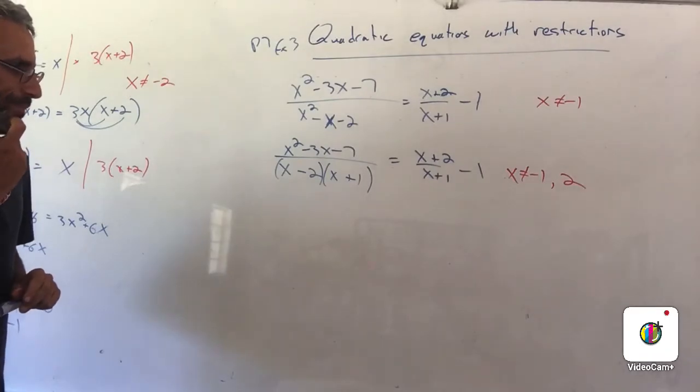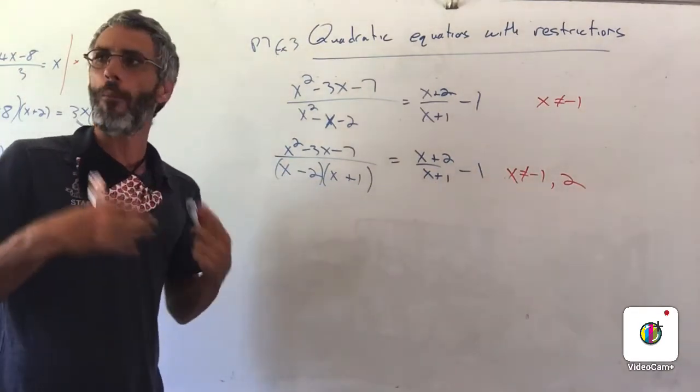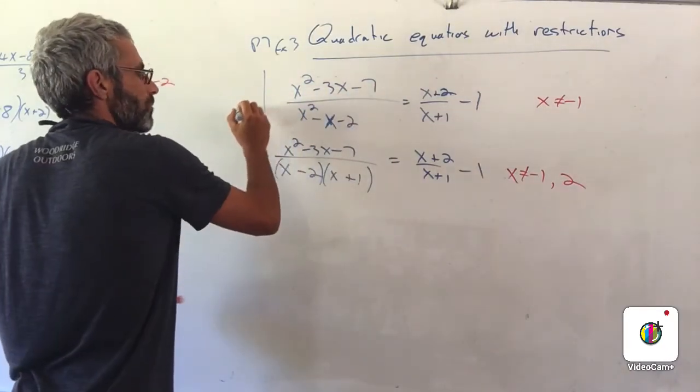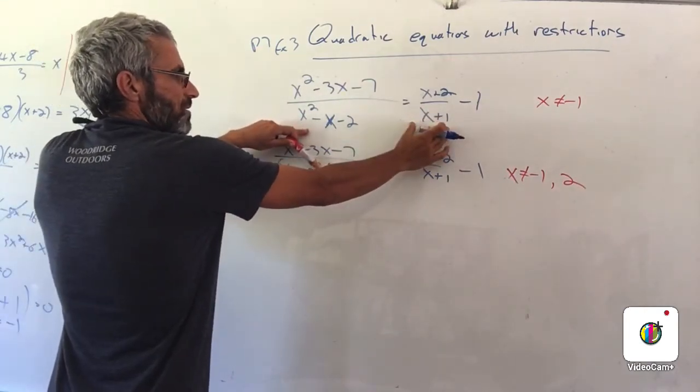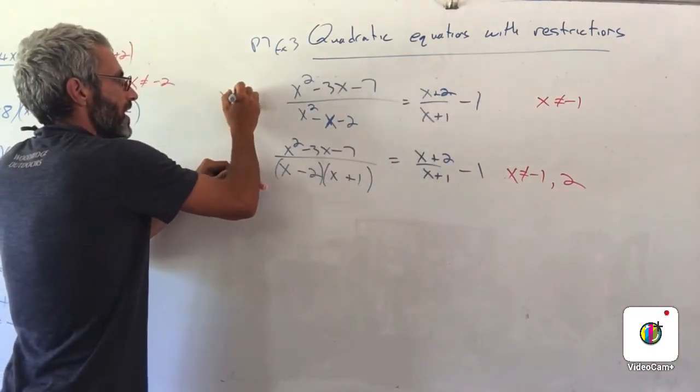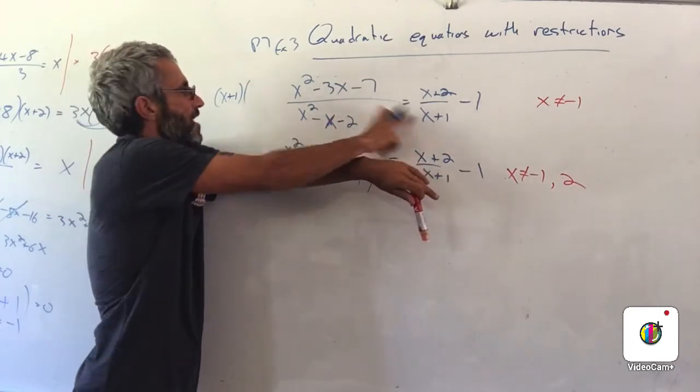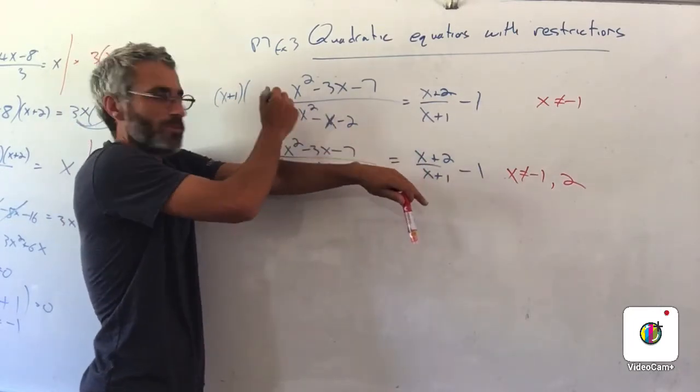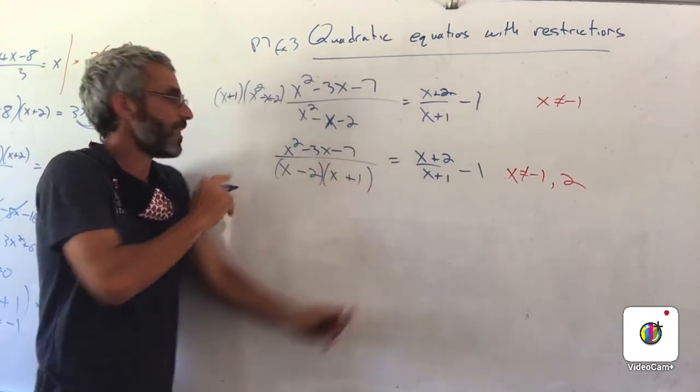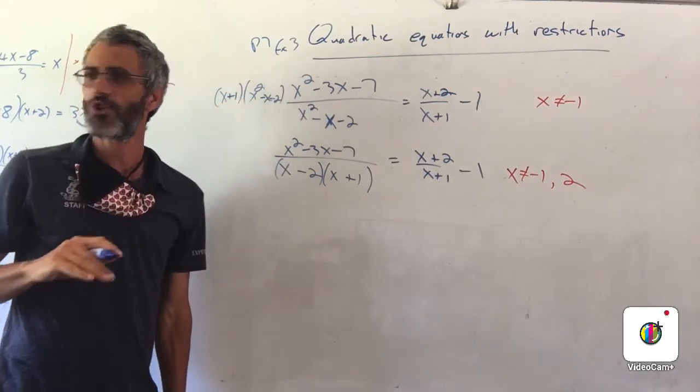But now, because we factorize it, now it's easy to find out what's the restriction, but we also got a bonus. If we didn't factorize, what would we have to multiply both sides by? I would have to multiply both sides by x plus 1, and x squared minus x minus 2, right? I had to multiply by both. That's a cubic term. It's going to be x cubed. And if you do that, you're mad. It's going to be so difficult.